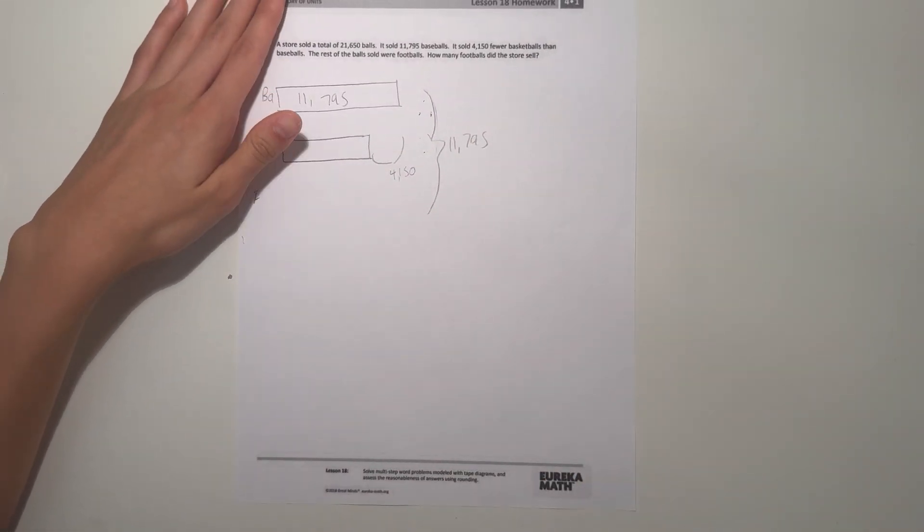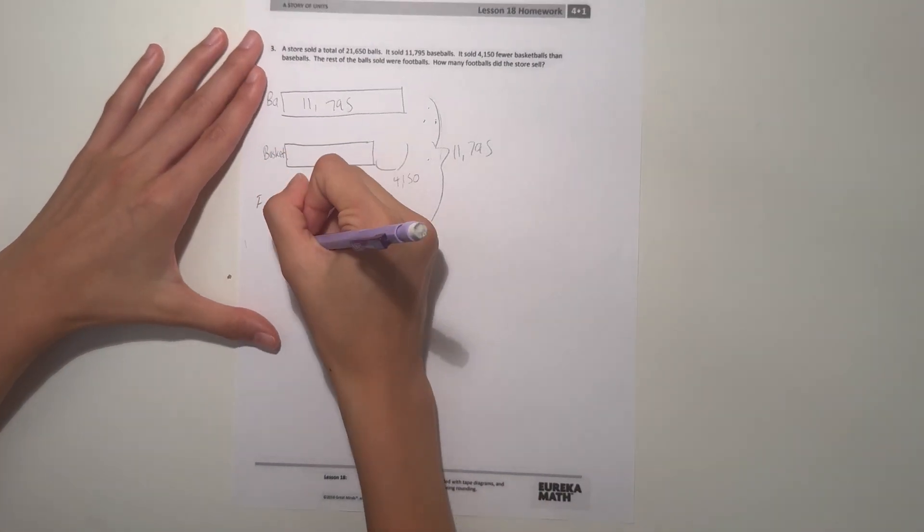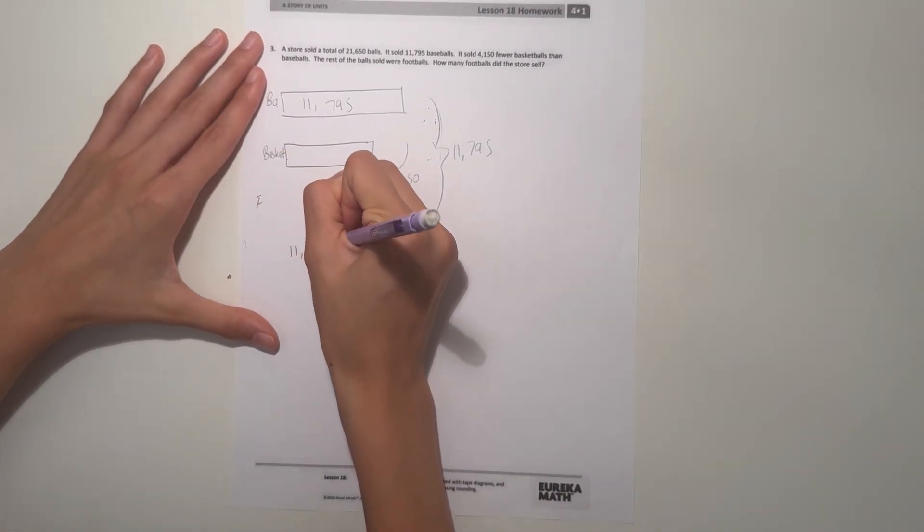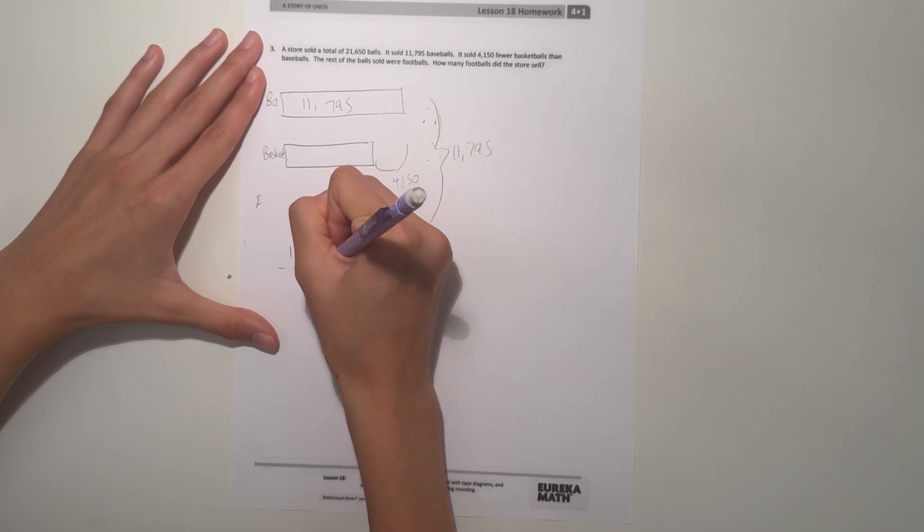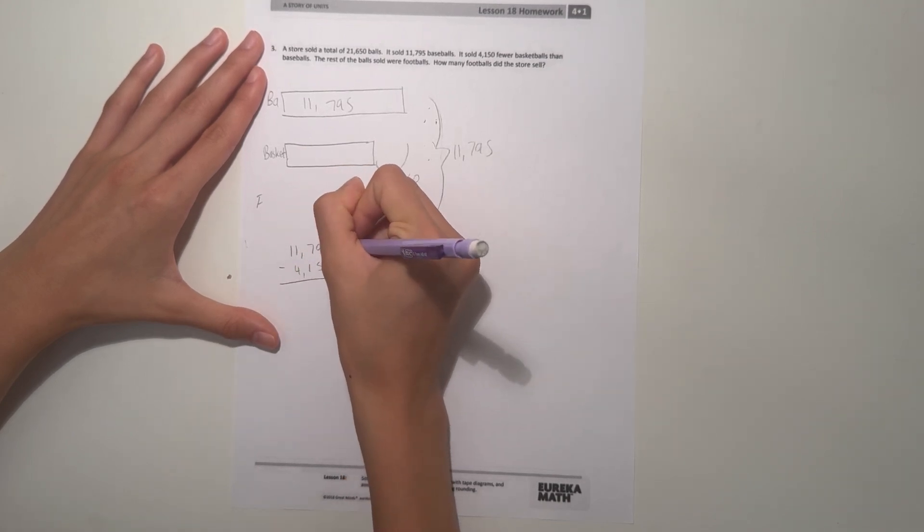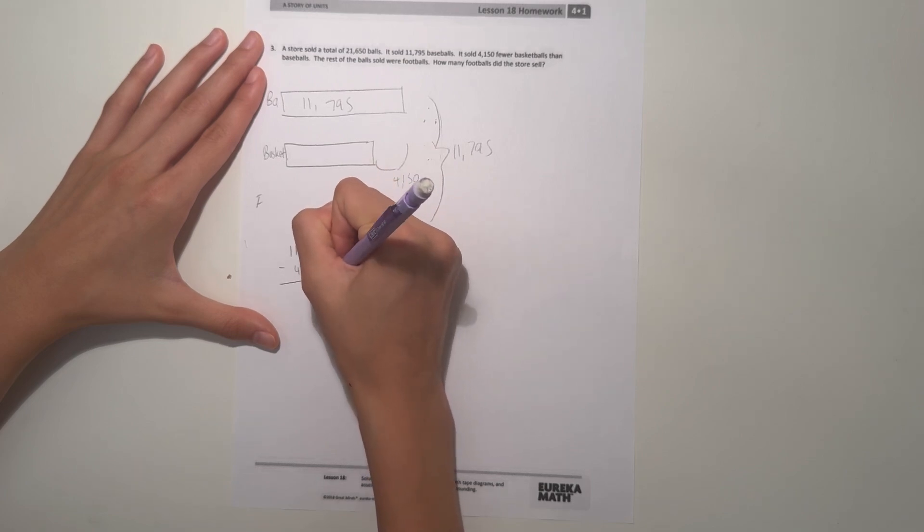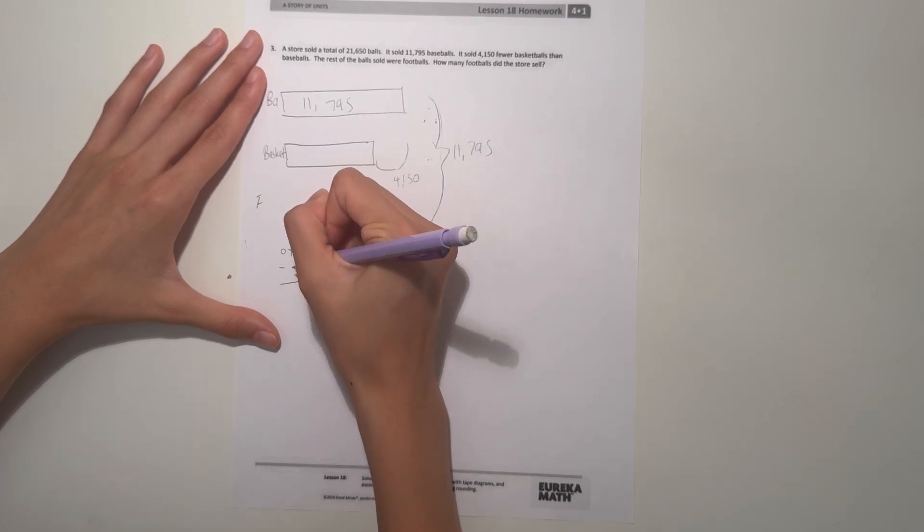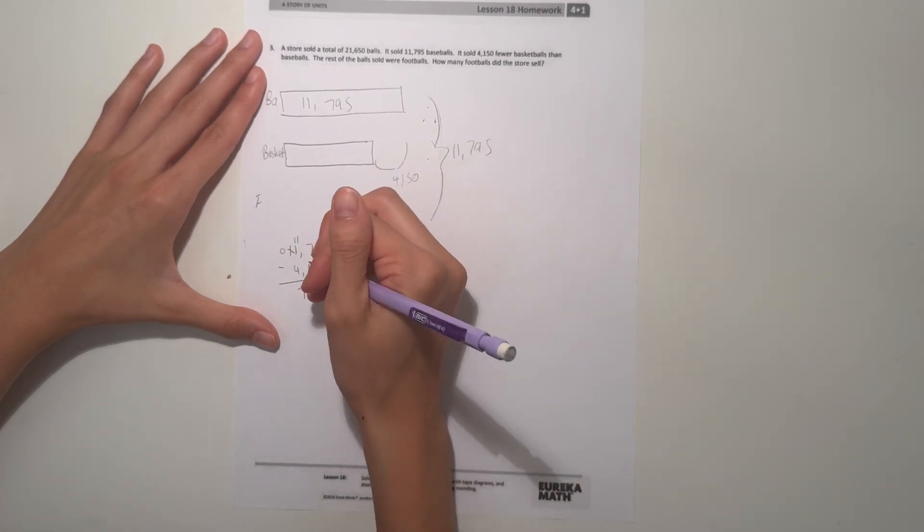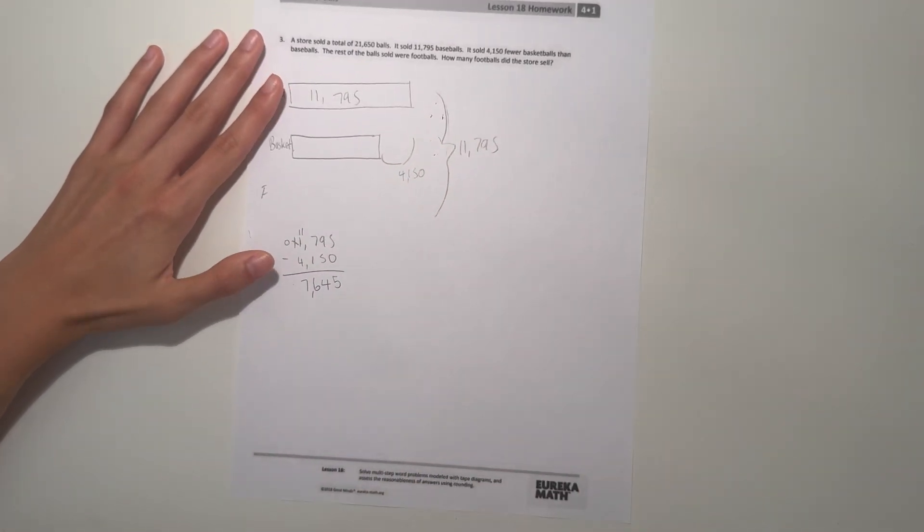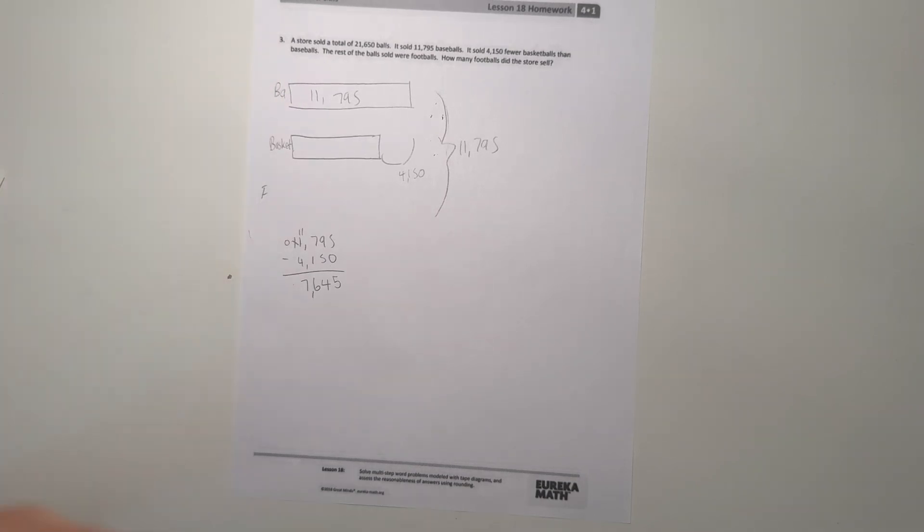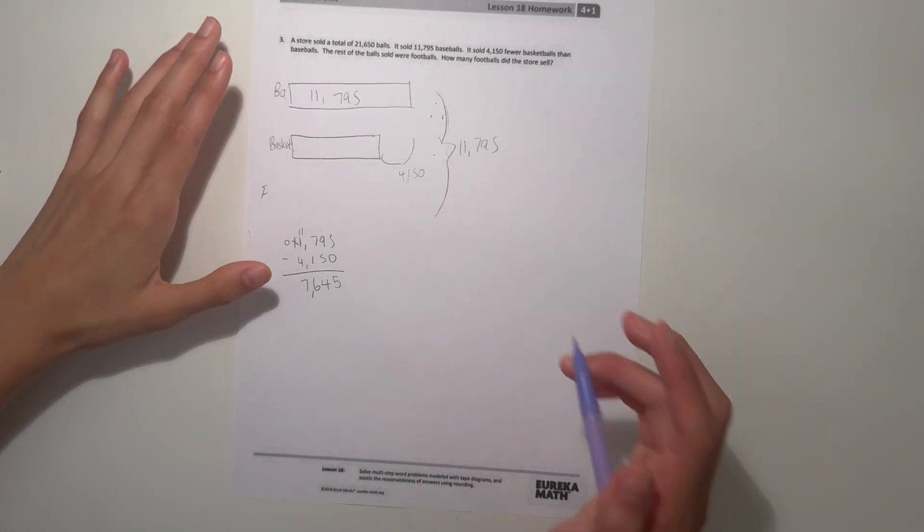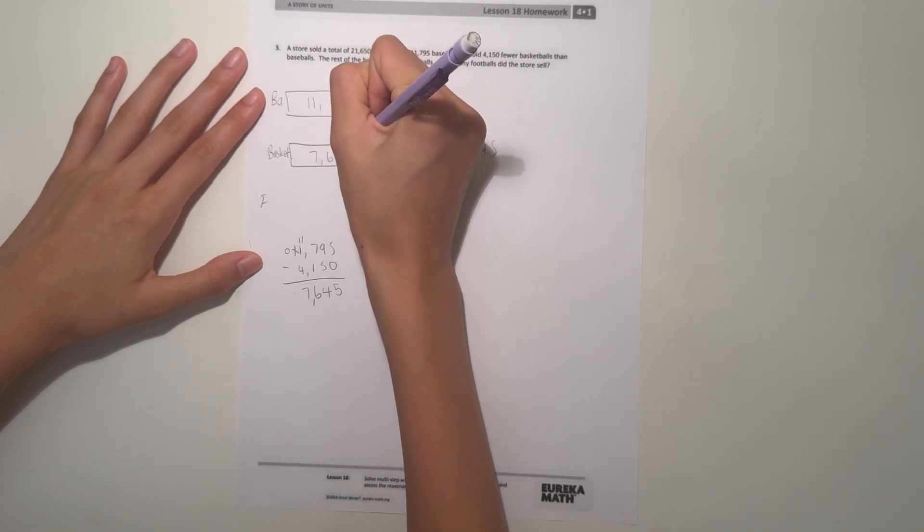Let's first start by finding out how many basketballs there are. So 11,795 minus 4,150: 5 minus 0 is 5, 9 minus 5 is 4, 7 minus 1 is 6, borrow a 10, 11 minus 4 is 7. So our answer is 7,645. That means that's how many basketballs there are.